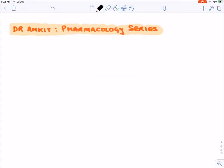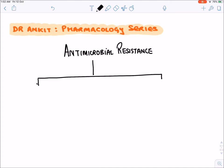Today we will be discussing a very important topic known as antimicrobial resistance. Antimicrobial resistance means a bacteria or microbe has become resistant to an antimicrobial. This resistance is of two types: either a bacteria is inherently resistant to an antimicrobial (inherent resistance), or it has acquired the resistance — earlier it was sensitive but now the bacteria has acquired this resistance through some means.